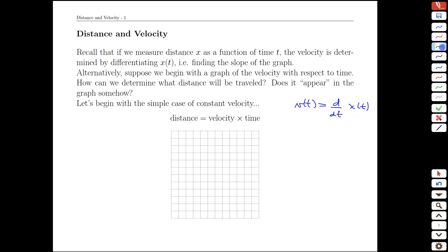We know that velocity is the slope on the position graph. What we're asking now is where do we find position on a velocity graph?